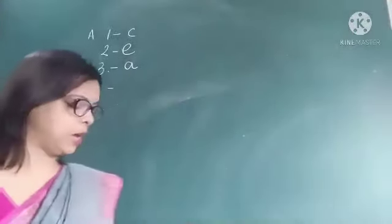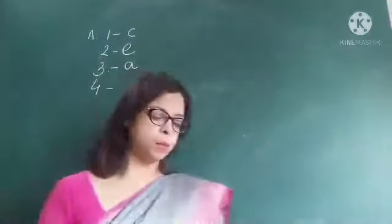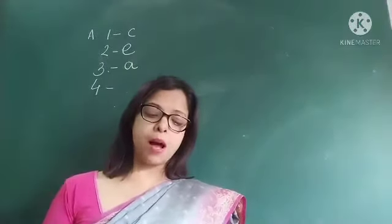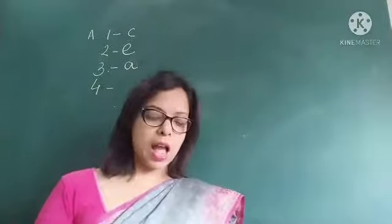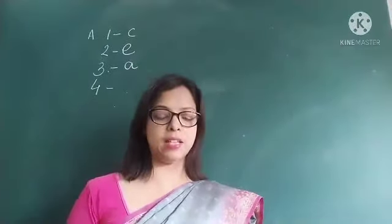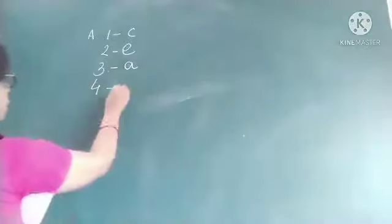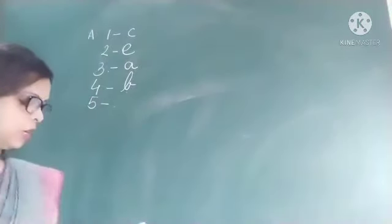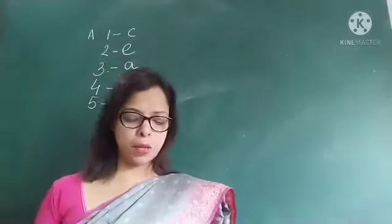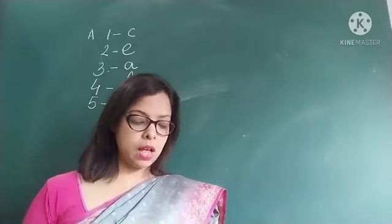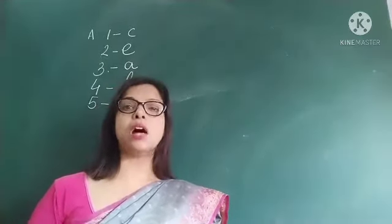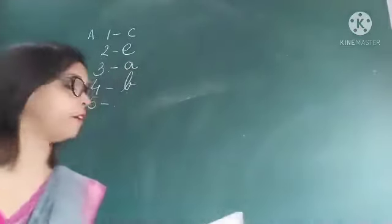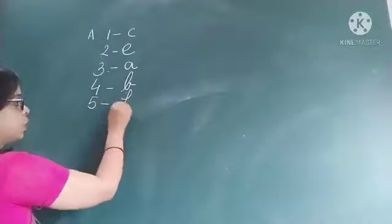Fourth: 'After taking the baby whale back home, Noe filled the bathtub with cold water and put the whale inside.' So four matches with B. Fifth: 'Noe and his father put the baby whale in a motorboat and rode out into the sea to put it back into the waters.' So five matches with F.